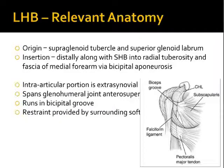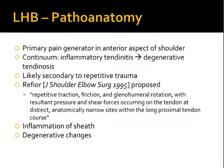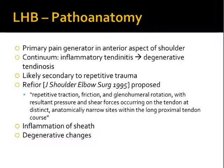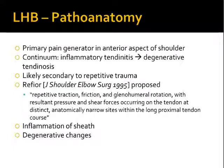In terms of pathoanatomy, the long head biceps seems to be a primary pain generator in the anterior aspect of the shoulder. There's a continuum of pathology from an inflammatory tendinitis through to a degenerative tendinosis, and this is thought to be secondary to continued repetitive trauma — a mechanism proposed by Refio in 1995. Ongoing inflammation causes inflammation of the tendon sheath itself and then further degenerative changes in the tendon.